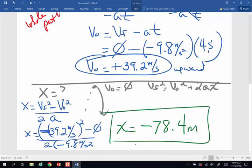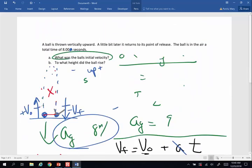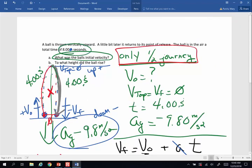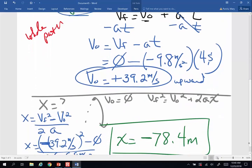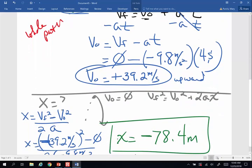Now what the heck do I have a negative sign on my displacement for? That's because I used the second half of the journey, and I went from here down, and that negative 78.4 is an indicator that my object during that portion of the path was going in the downward direction. All right, we'll see you next time for one that's a little bit more complicated.